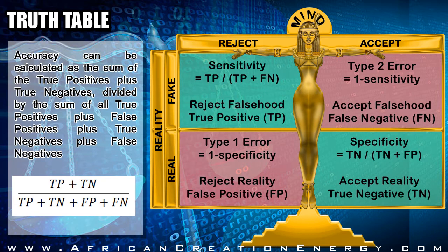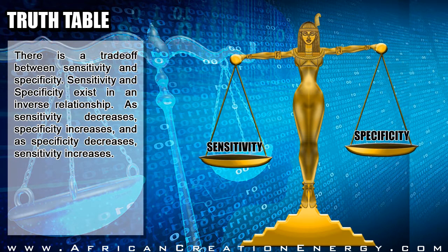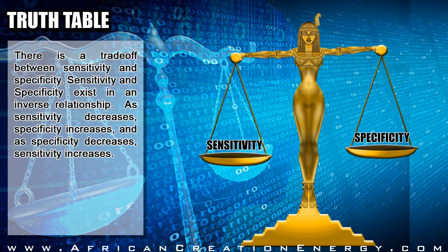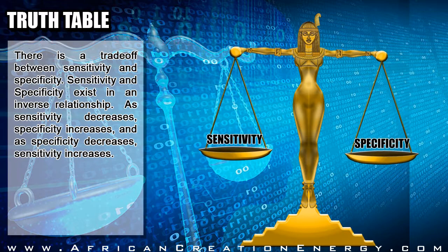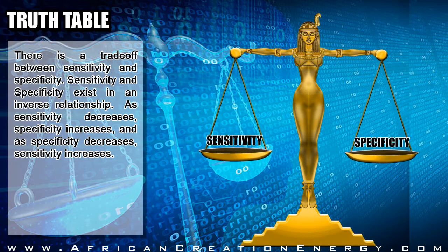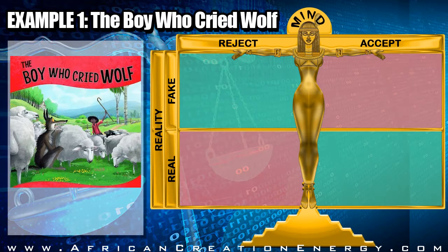The diagnostic odds ratio is useful for conducting meta-analysis. If the diagnostic odds ratio is greater than 1, the two events are positively correlated; if less than 1, they are negatively correlated; if equal to 1, they are independent. Accuracy can be calculated as the sum of true positives plus true negatives divided by the sum of all true positives plus false positives plus true negatives plus false negatives. If we are too sensitive, we end up rejecting everything as false; if we are too specific, we accept everything as true. Therefore, there is a trade-off: sensitivity and specificity exist in an inverse relationship.